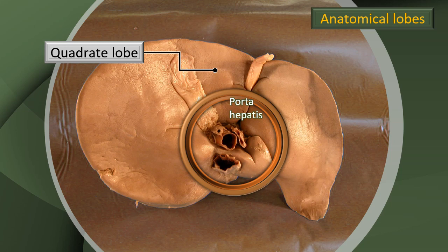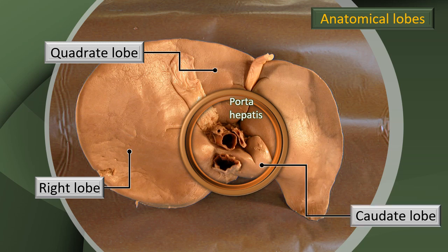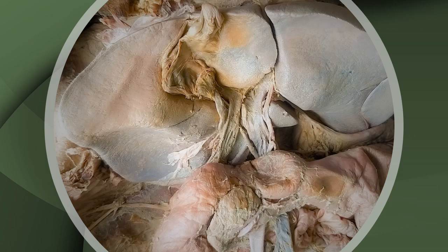You can see the quadrate lobe right in front of the porta hepatis and to the left of the gallbladder, limited on the left by the ligamentum teres. The right lobe is the huge principal part of the liver. The caudate lobe is behind the porta hepatis, extending posteriorly in close contact with the inferior vena cava. That's the left lobe.